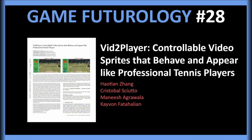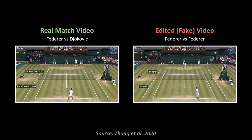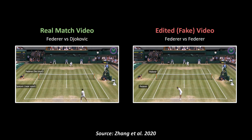This is an AI synthesized fake video from the paper Wit2Player, controllable video sprites that behave and appear like professional tennis players. This paper, published by the researchers at Stanford University, tackles a very specific problem of editing the match footage video of real-life tennis matches using AI and other computer graphics techniques.